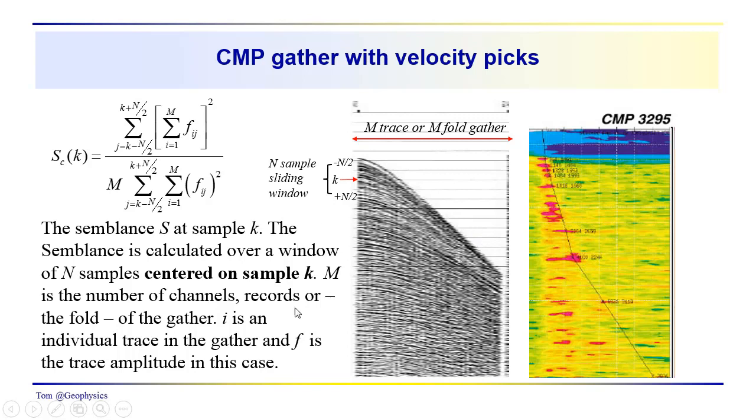And the gather i, again, is just an individual trace in the gather, and f is the trace amplitude in this case. It could be some other attribute. But we're just talking about amplitude in this case.